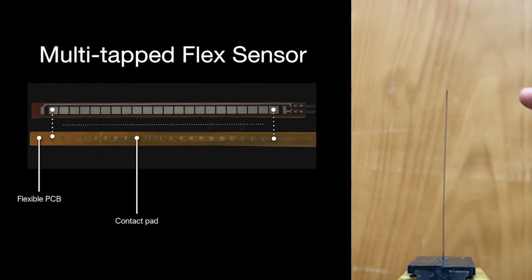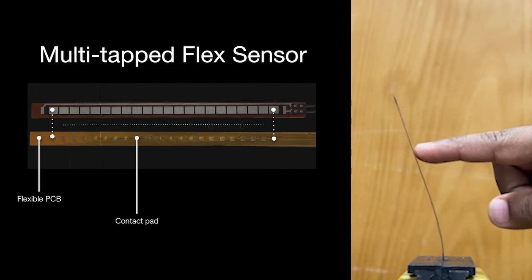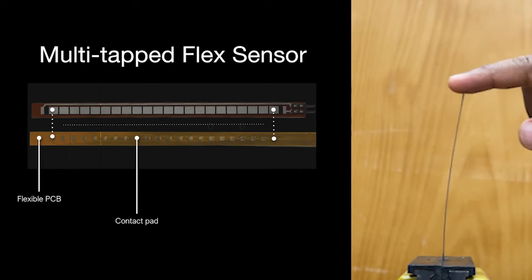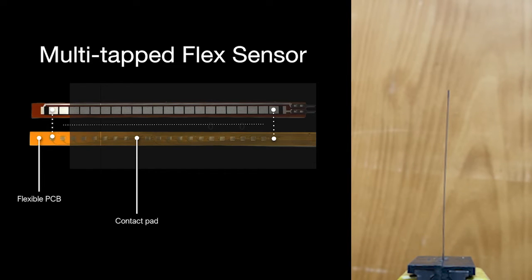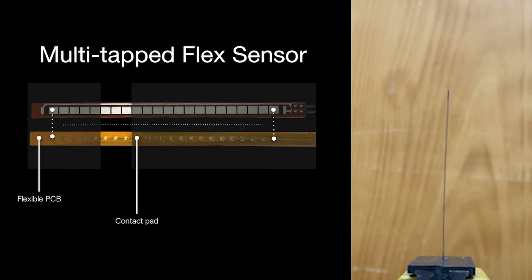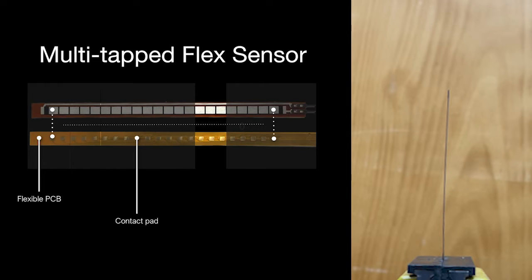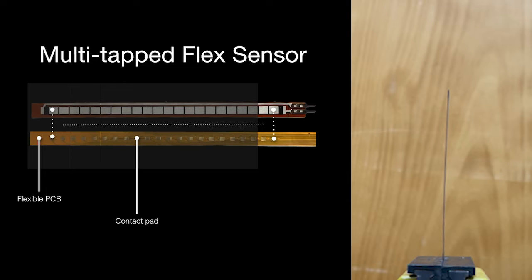To overcome this limitation, we introduce multi-tapping, which creates multiple electrical connections along the sensor. This modification allows us to measure sensor output by segments and extract additional information about the deformation, increasing our ability to infer a more detailed deformation state of the sensor.